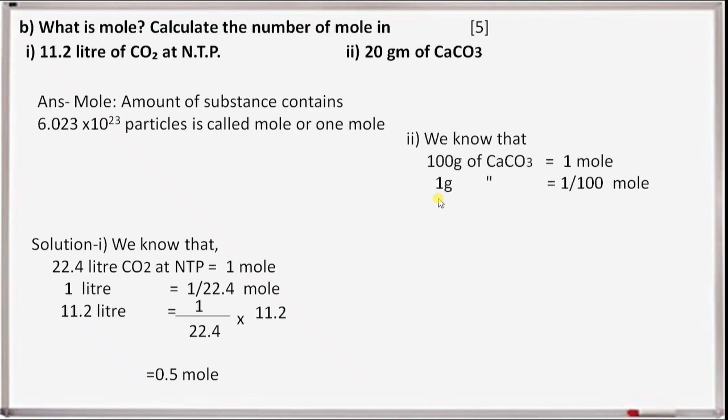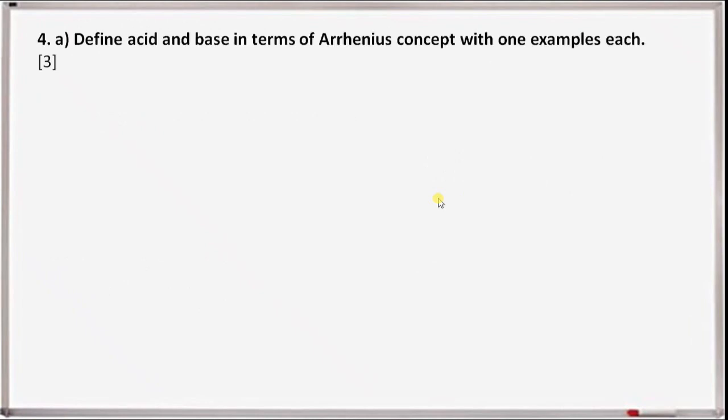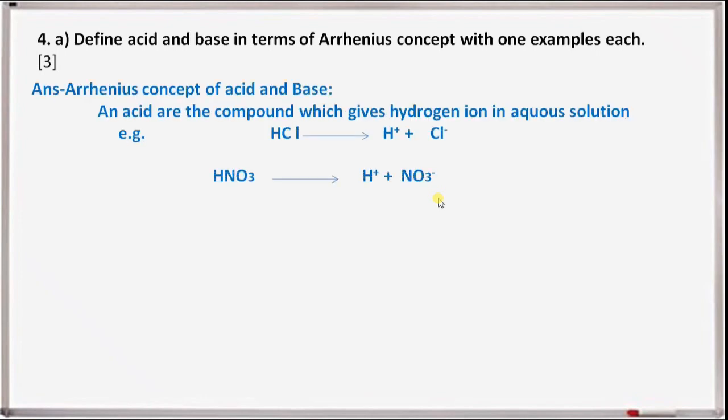For calcium carbonate: 100 grams of CaCO3 equals 1 mole, so 1 gram equals 1/100 moles, therefore 20 grams of calcium carbonate equals 1/100 into 20, which equals 0.2 moles.